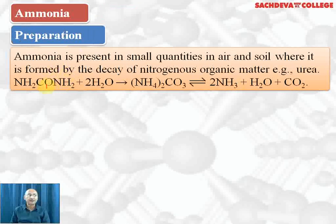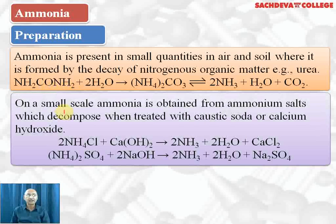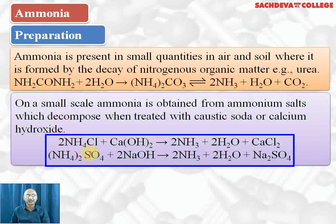Let's take up ammonia. Preparation of ammonia can be done by hydrolysis of urea — it forms ammonium carbonate, which decomposes to give ammonia plus water plus CO₂. Urea when treated with nitrous acid gives nitrogen and carbon dioxide. On a small scale or in the laboratory, we can prepare ammonia by heating slaked lime with ammonium chloride to get ammonia plus water plus calcium chloride.